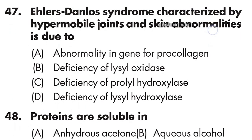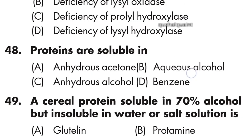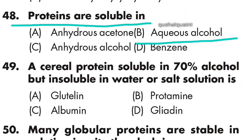Question 47: Ehlers-Danlos syndrome, characterized by hypermobile joints and skin abnormalities, is due to — option A is right — abnormality in enzymes for procollagen processing. Question 48: Prolamins are soluble in — option B is right — aqueous alcohol.